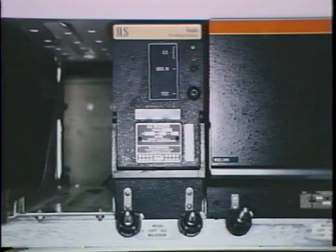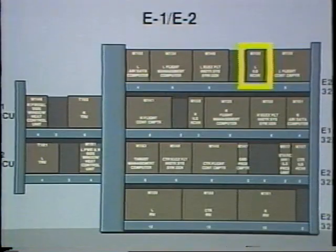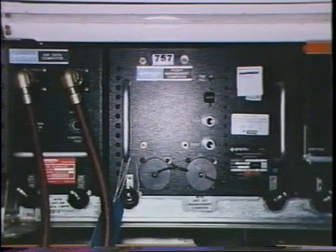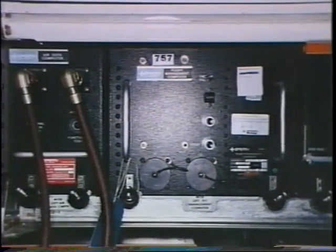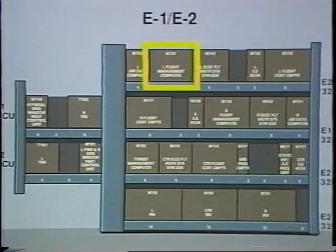The left ILS receiver supplies localizer deviation, glide slope deviation, and selected runway heading. It is on the E2 rack on the 757 and on the E1 rack for the 767. The left flight management computer is the main source of latitude, longitude, and magnetic track data. It is on the E2 rack for both the 757 and the 767.